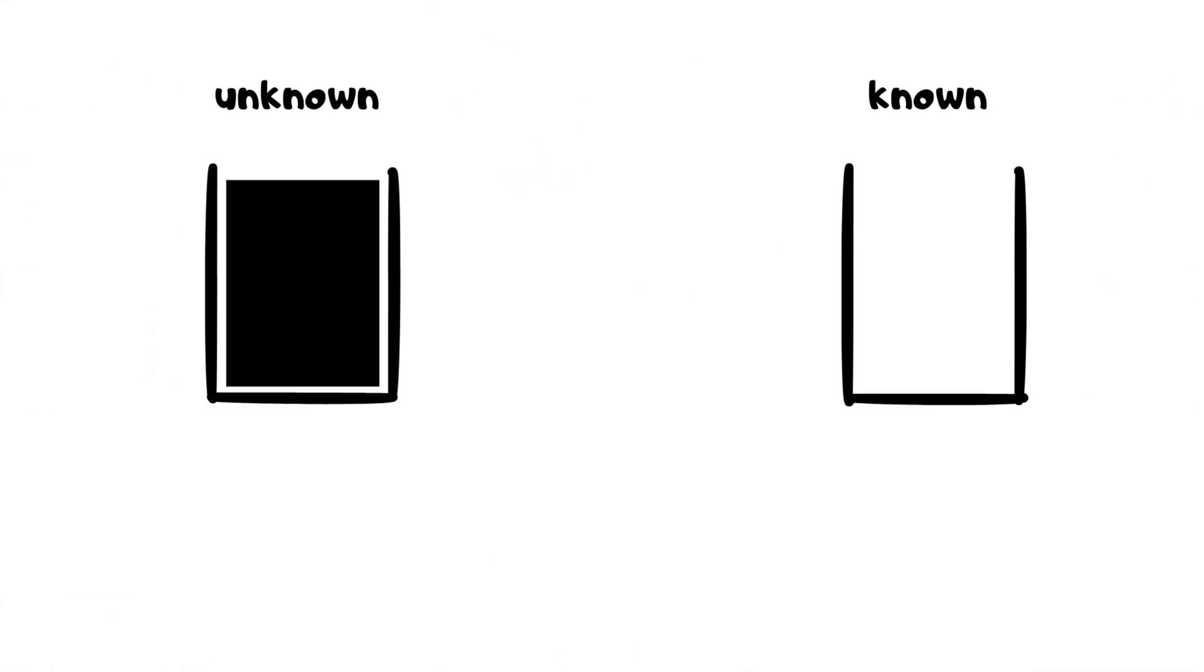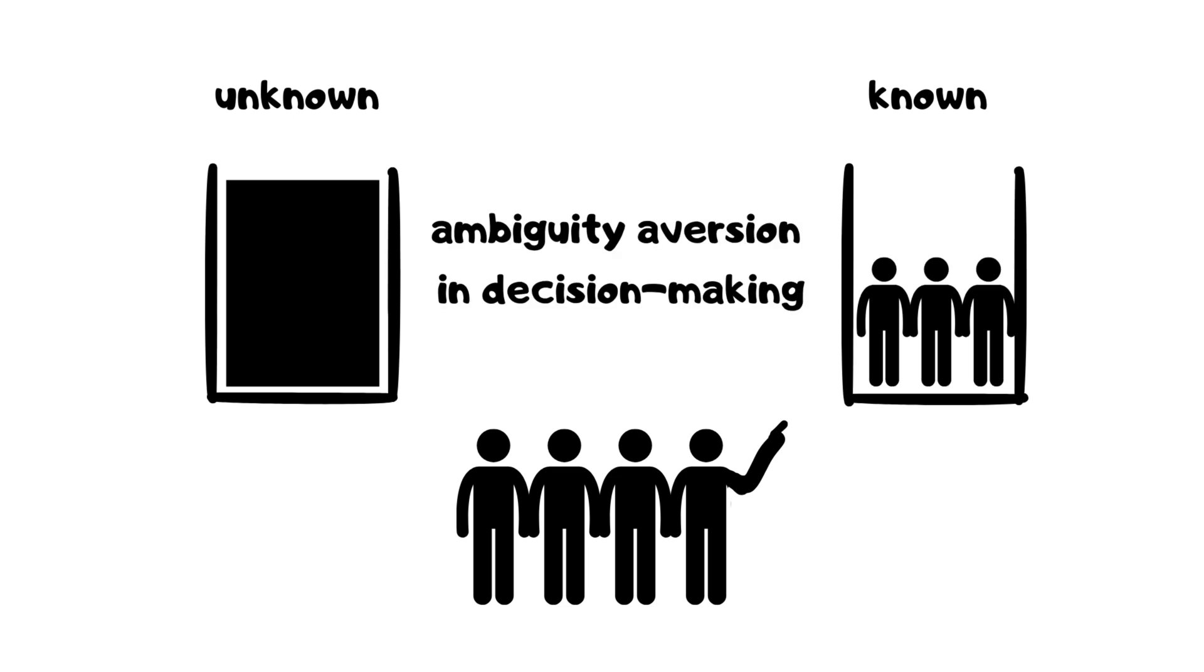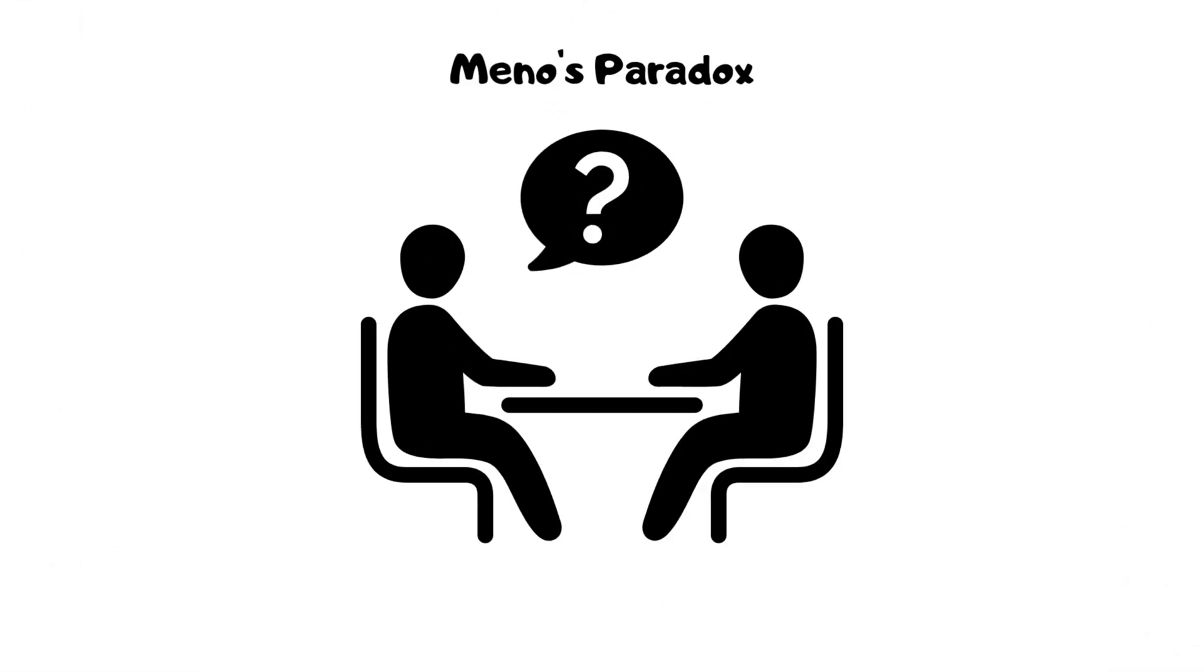Ellsberg paradox. Given two bets with equal expected value, one with known probabilities and one with unknown probabilities, people prefer the one with known odds, demonstrating ambiguity aversion in decision making.